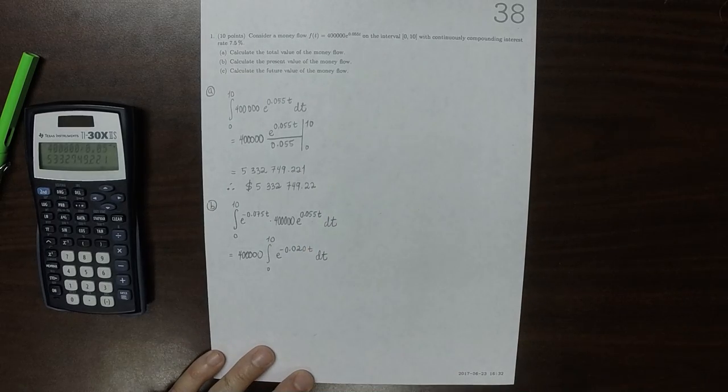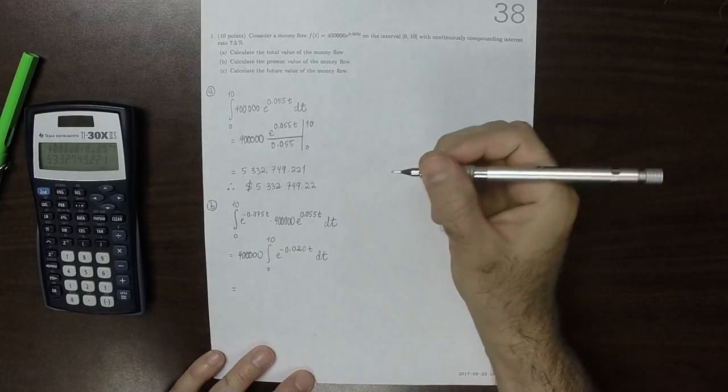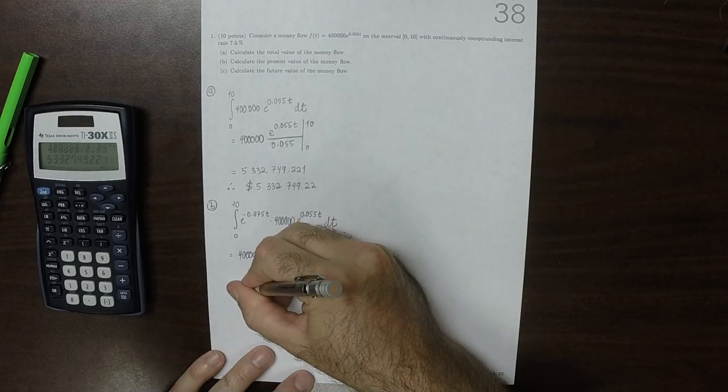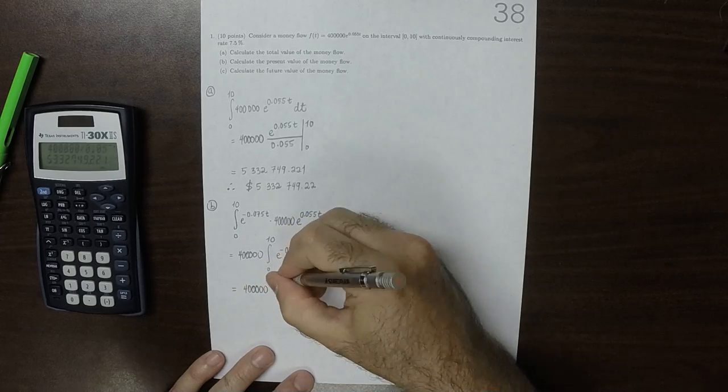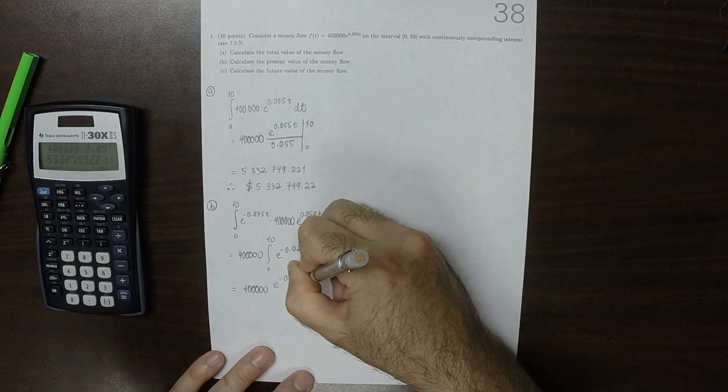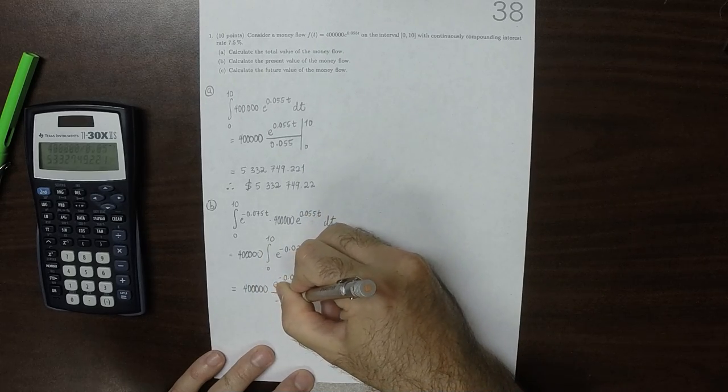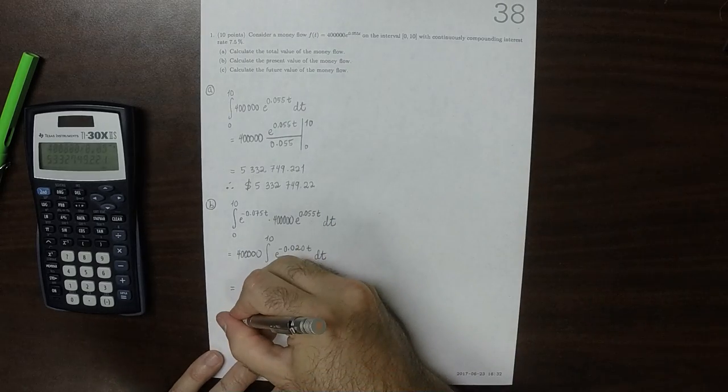This is something that we can integrate directly. So this would be 400,000 exponential negative 0.020t, divided by negative 0.020, and then from 0 to 10.